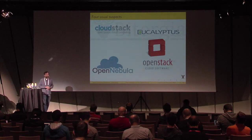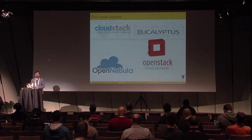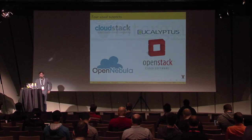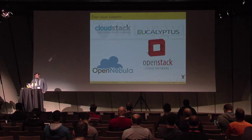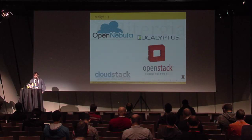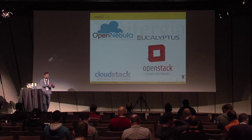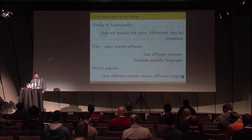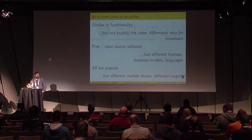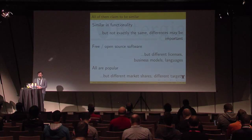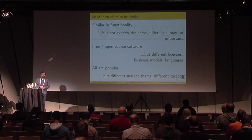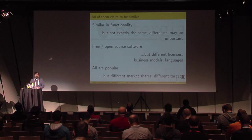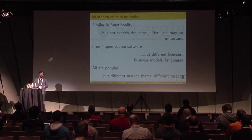The four systems I'm going to consider in the study are CloudStack, Eucalyptus, OpenStack, and OpenNebula. Obviously there are others, but these are probably the most popular open source systems in the cloud infrastructure domain. I'm going to try not to favor any particular order — I'll order them roughly from less to more activity or size just to ease the presentation. All of them claim to be similar in some respects, but they are free open source software with different licenses, different communities, different business models, and different programming languages.